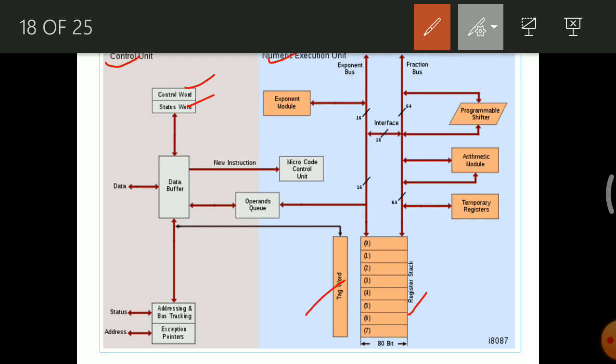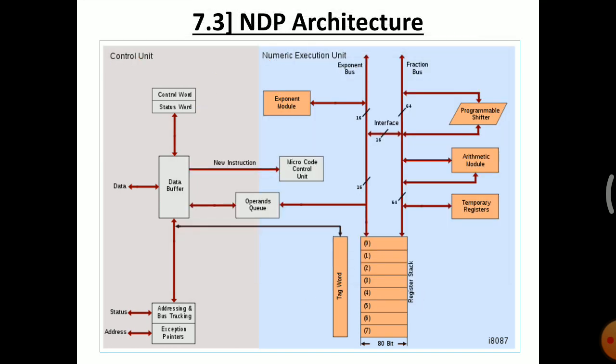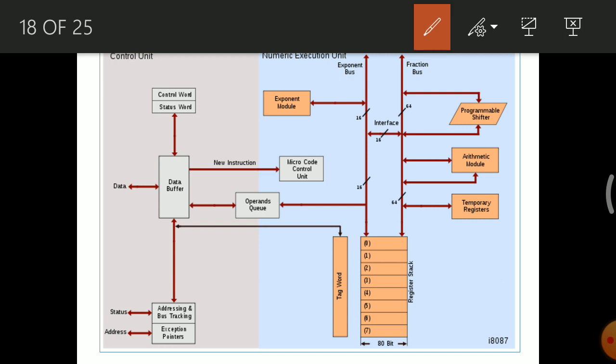Let us first have a brief overview of this block diagram architecture. On the left-hand side, in the control unit, there are two registers: the control word and the status word. These are two 16-bit words, and their working will be seen in more detail in further slides. The control unit also has a data bus buffer, an addressing and bus tracking block, and exception pointers.